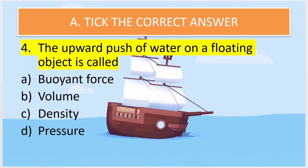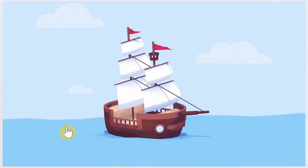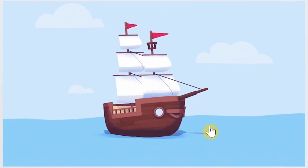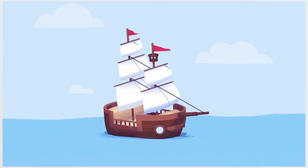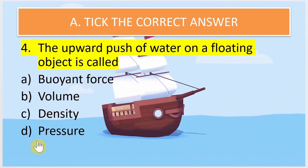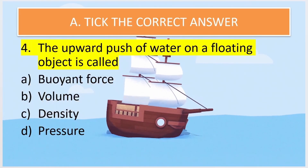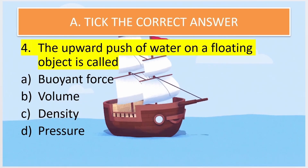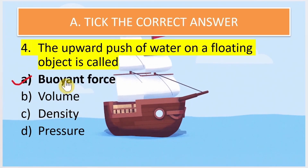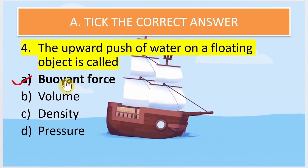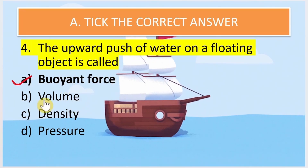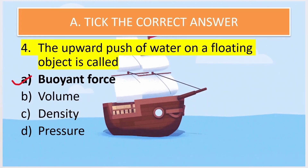Fourth question: the upward push of water on a floating object is — in this image you can see a shape which is floating on water. The options are buoyant force, volume, density, and pressure. The correct answer is buoyant force, which is the force responsible for that upward push on the object.